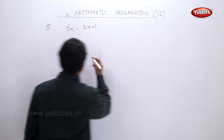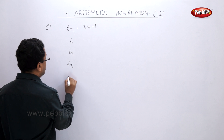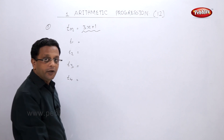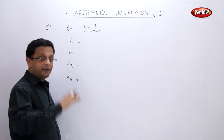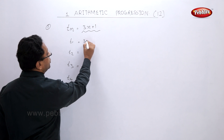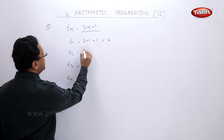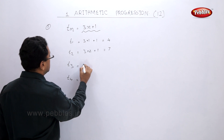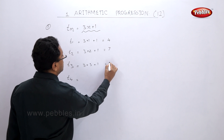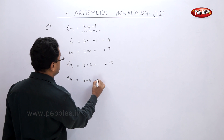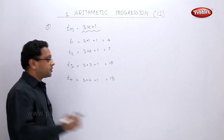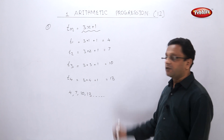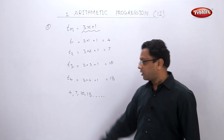The first 4 terms are T1, T2, T3, and T4. The formula is simple — just substitute n. T1: 3(1) + 1 = 4. T2: 3(2) + 1 = 7. T3: 3(3) + 1 = 10. T4: 3(4) + 1 = 13. So the sequence is 4, 7, 10, 13, and so on.